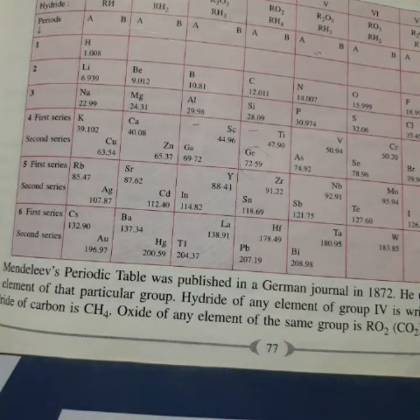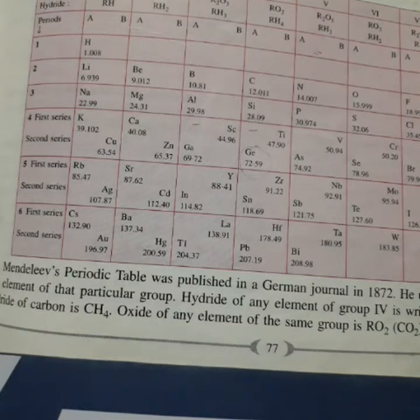Same way, cobalt with atomic mass 58.9 is placed before nickel with atomic mass 58.7. So, why he did this? He did this to get elements with similar properties in the same column. Okay, this point is clear.